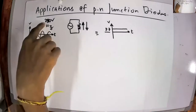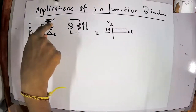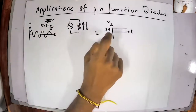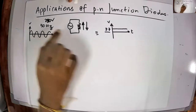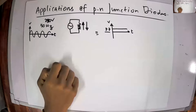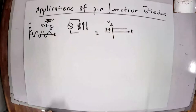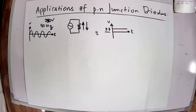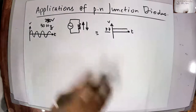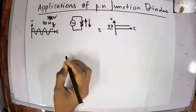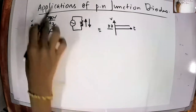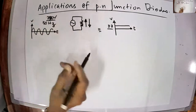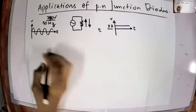Your charger has to reduce the 230 V down to 3.7 V and also convert the oscillating AC current into DC. We can use diodes to do this — to rectify the AC current. Since 230 V is very large, we first need to step it down using a step-down transformer, which you have studied in your A-levels.